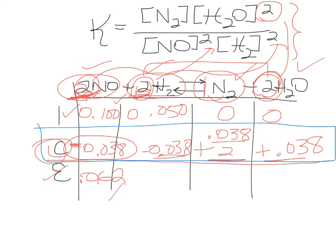Now that you have all the change values filled in, it's simply a math problem. 0.1 minus 0.038 is 0.062. 0.050 minus 0.038 is 0.012.